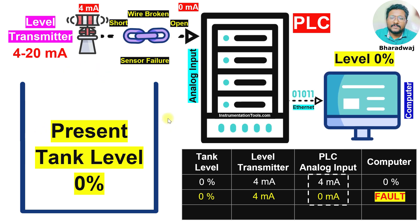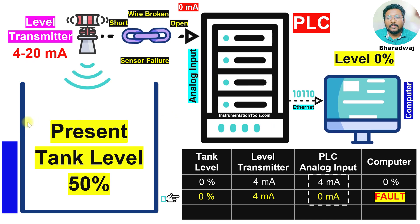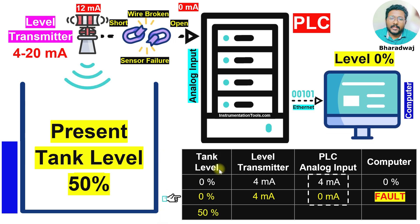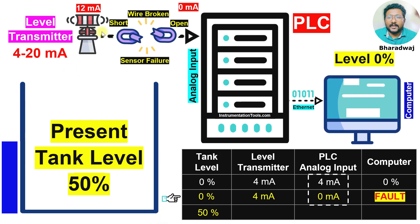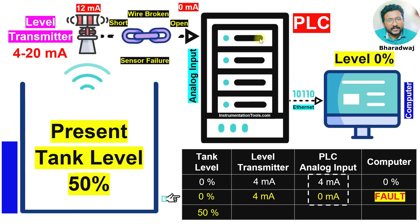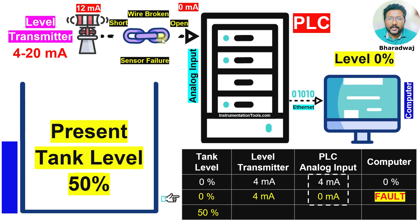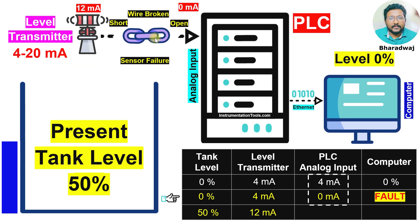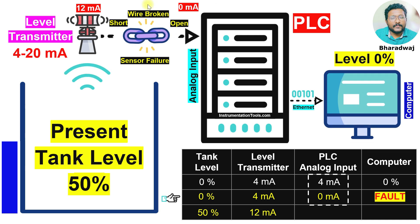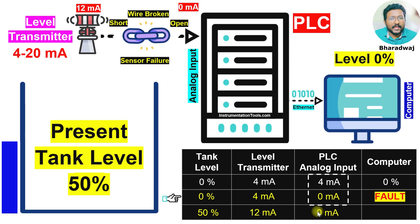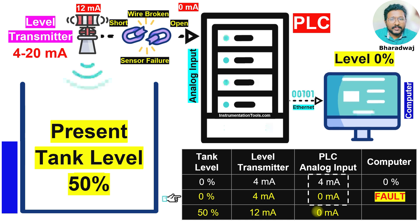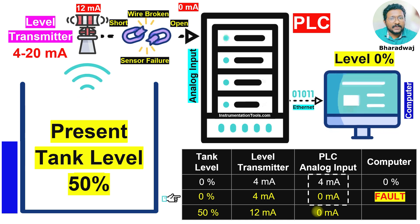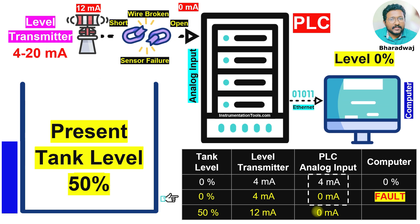Let's say the tank level is 50 percent. The level transmitter is sending 12 milliamperes to the PLC, but the wire is still broken. Since the wire is broken, the PLC receives zero milliamperes. Same concept applies — it must receive at least 4, and since it is receiving zero milliamperes, which is less than 4, it will immediately consider the state as faulty.